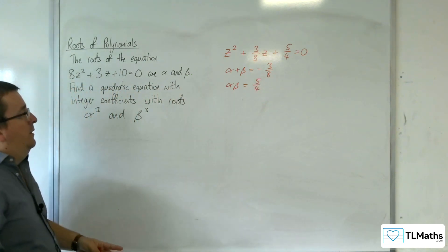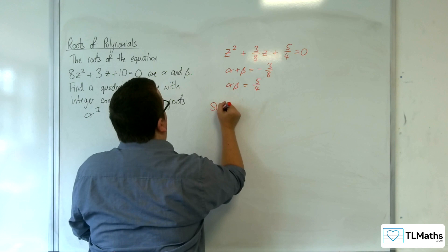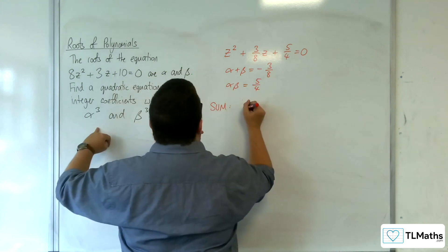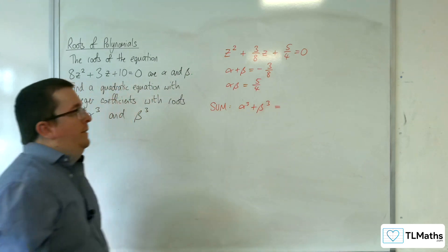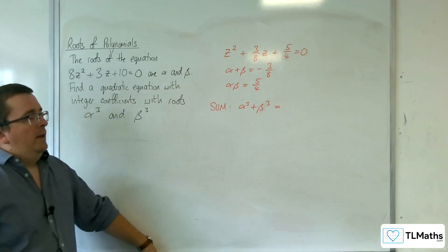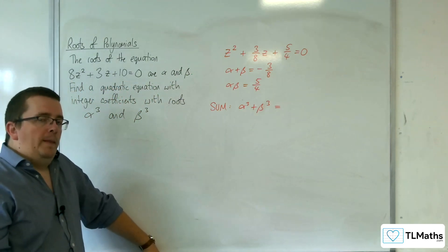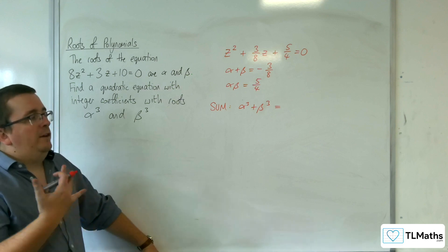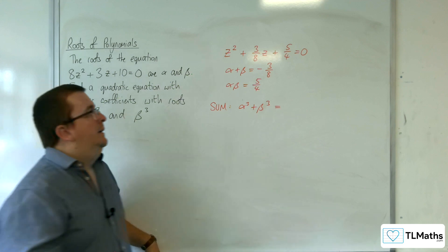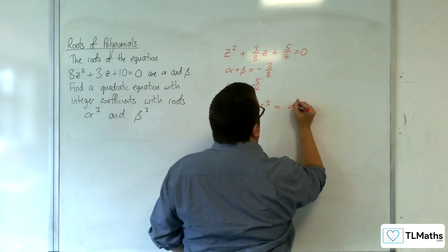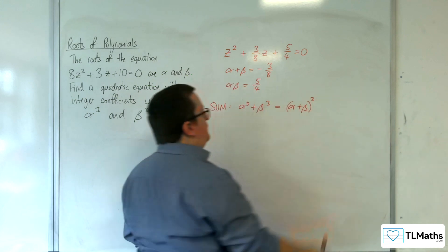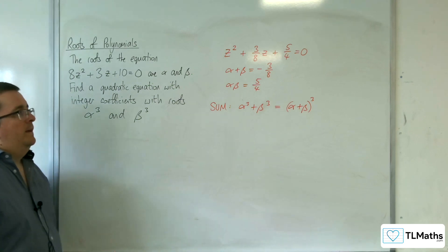The new sum that I need is α³ + β³. In much the same way as we looked at in the previous video, to get α² + β², I needed to look at (α + β)². So to get α³ + β³, I need to look at (α + β)³.